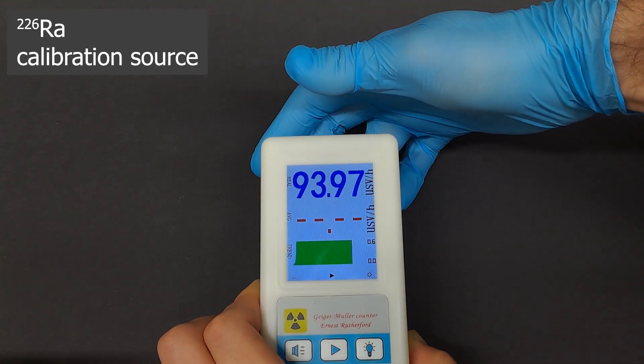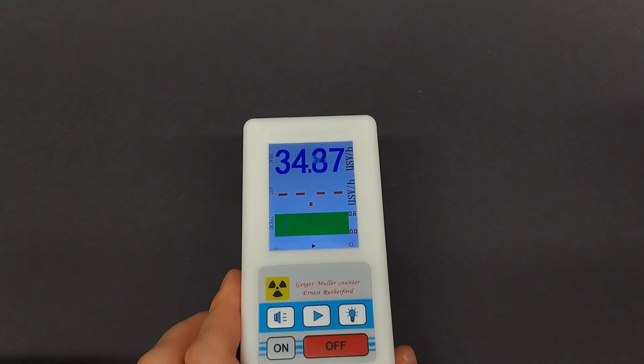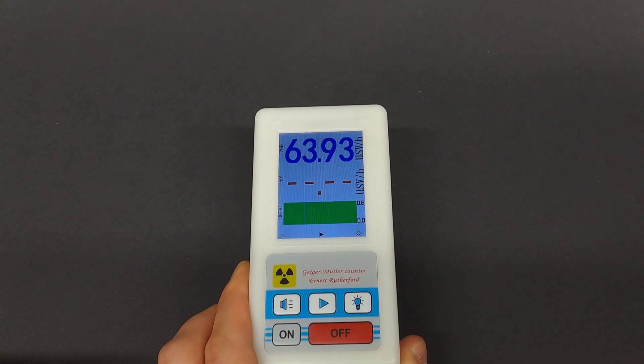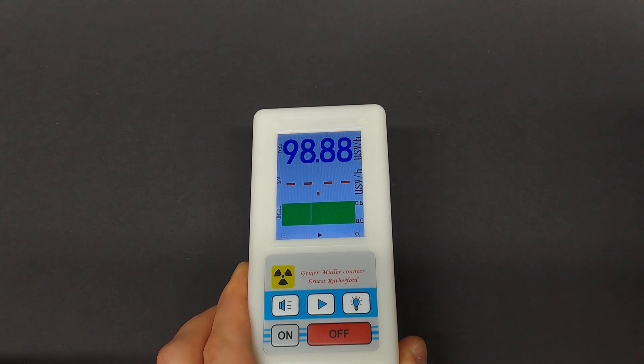And since I've already have so many radioactive samples here, I have to max out the Hobbit meter. So 99.99 microsieverts an hour is the limit for this device.